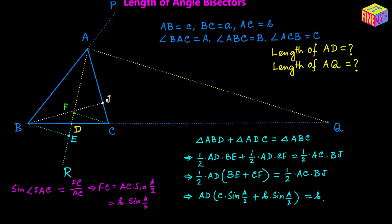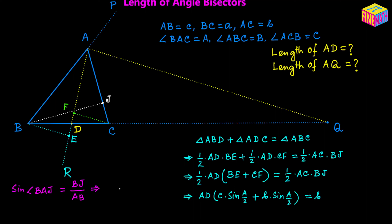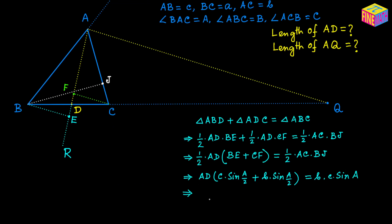For BJ: in right triangle ABJ, sine of angle BAJ equals BJ over AB, so BJ = AB·sin(BAJ). Angle BAJ is angle A, and AB = c, so BJ = c·sin(A). On the right-hand side, AC = b, so we write b times BJ = b·c·sin(A).